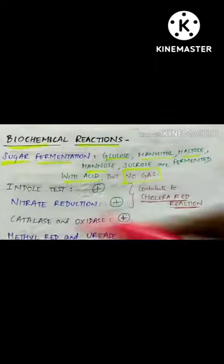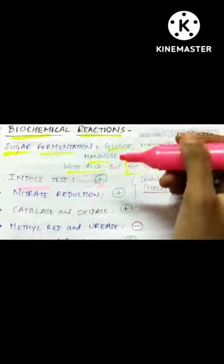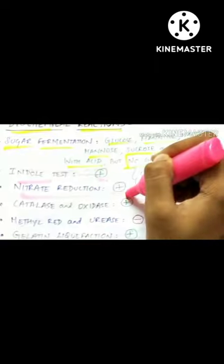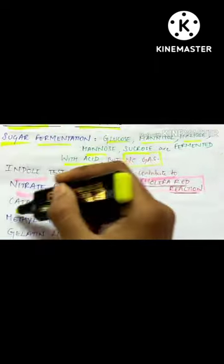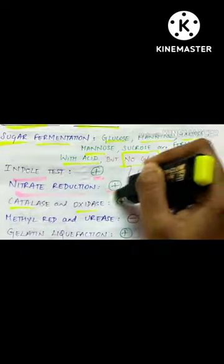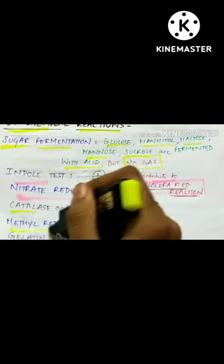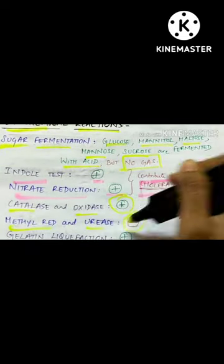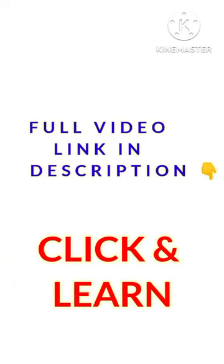Biochemical reactions of Vibrio cholerae: indole test is positive and nitrate reduction is positive. The catalase and oxidase reactions are positive, but methyl red and urease are negative. Gelatin liquefaction is also seen.